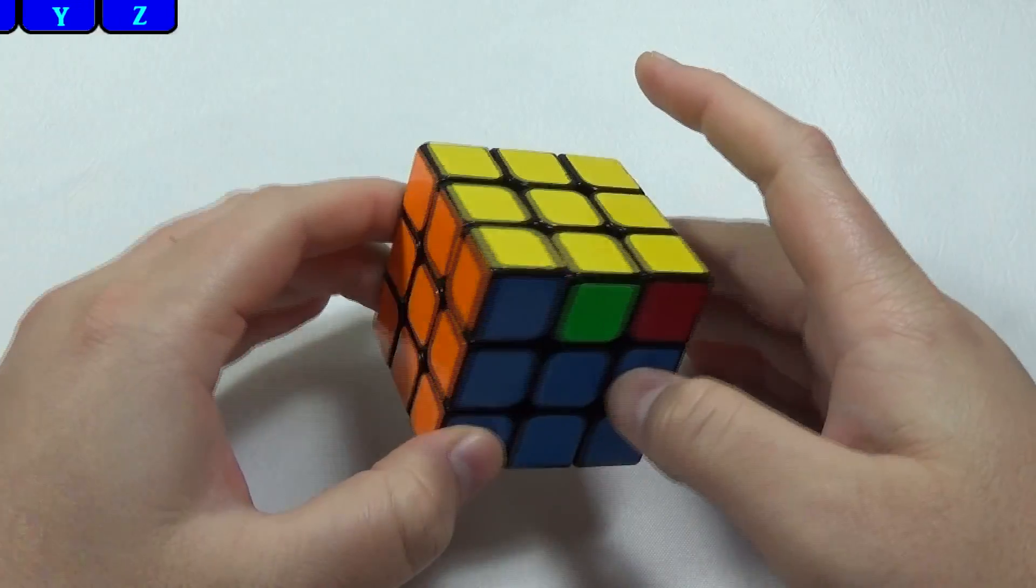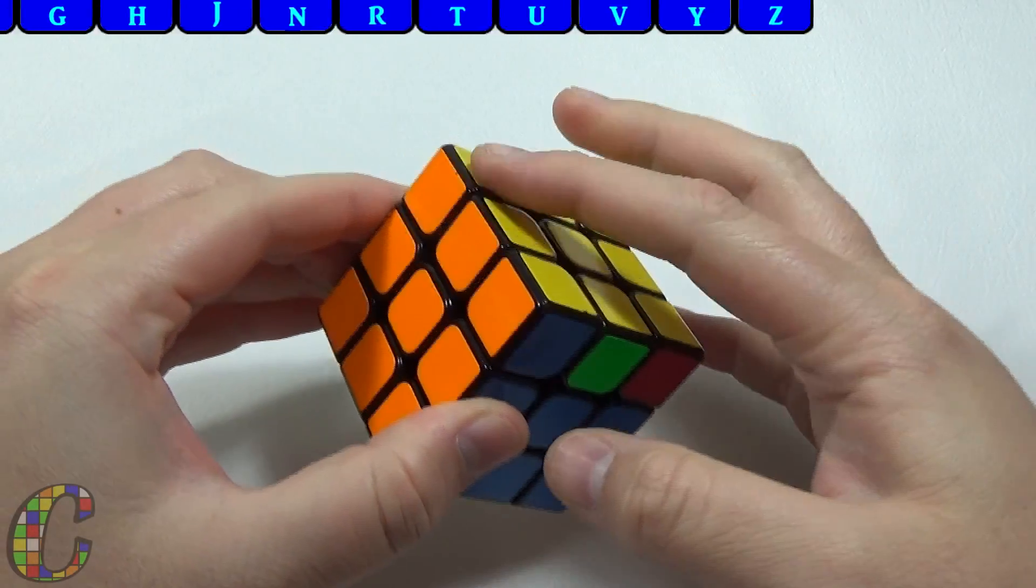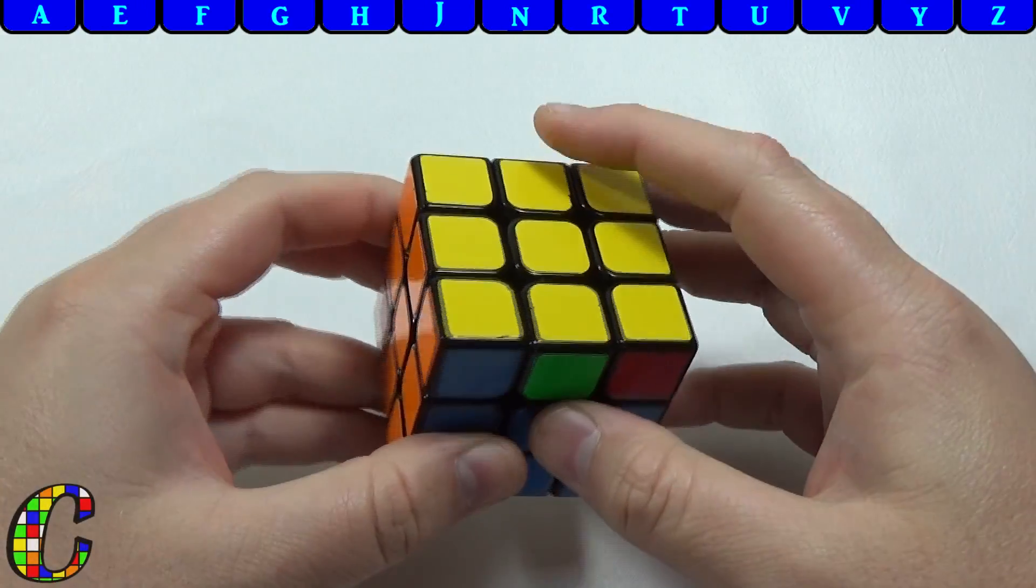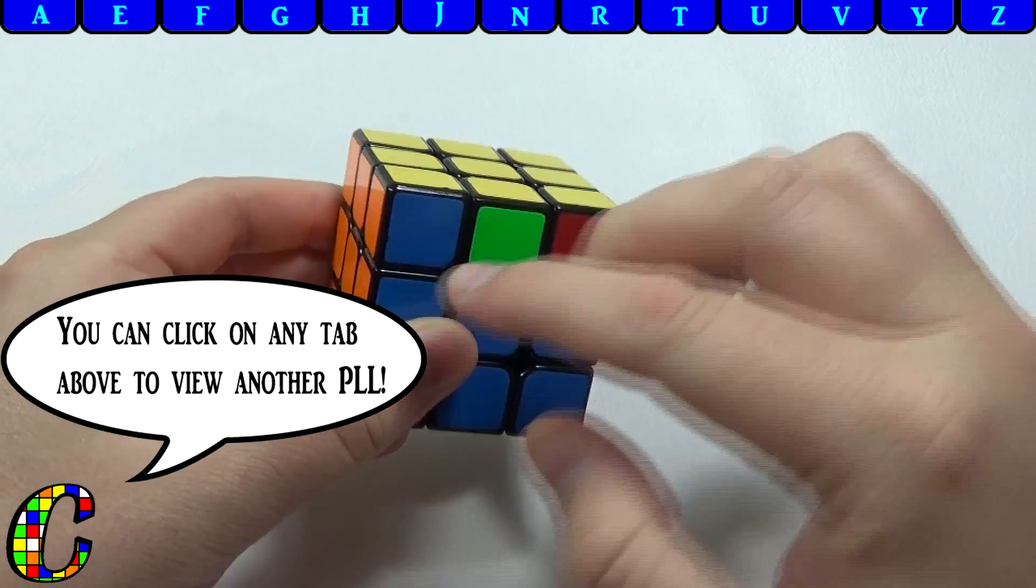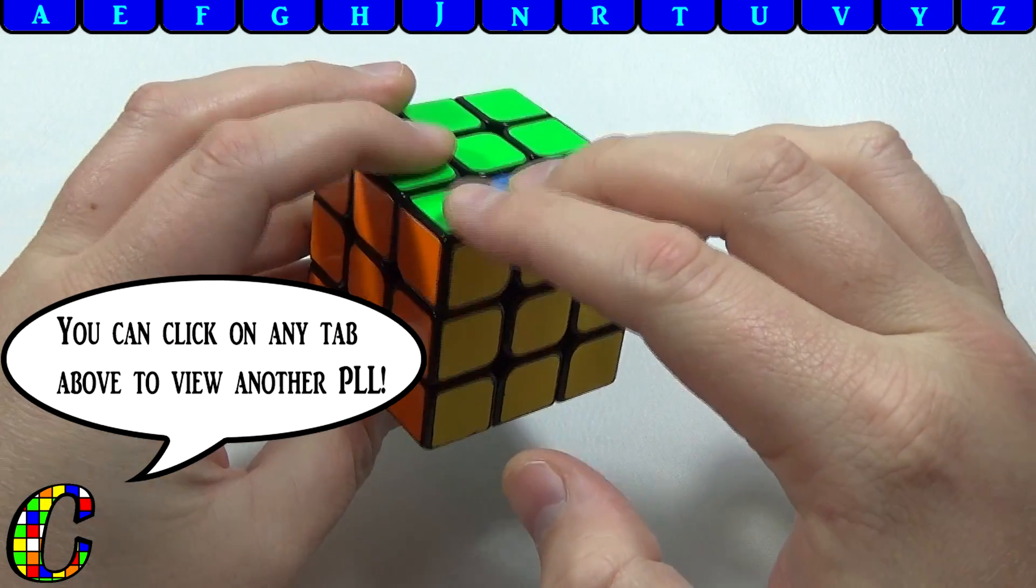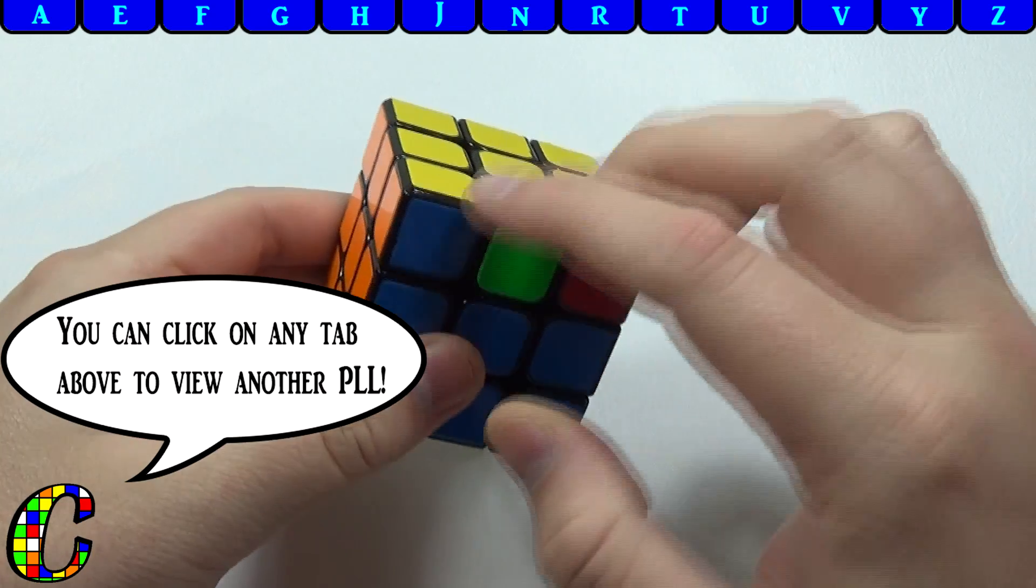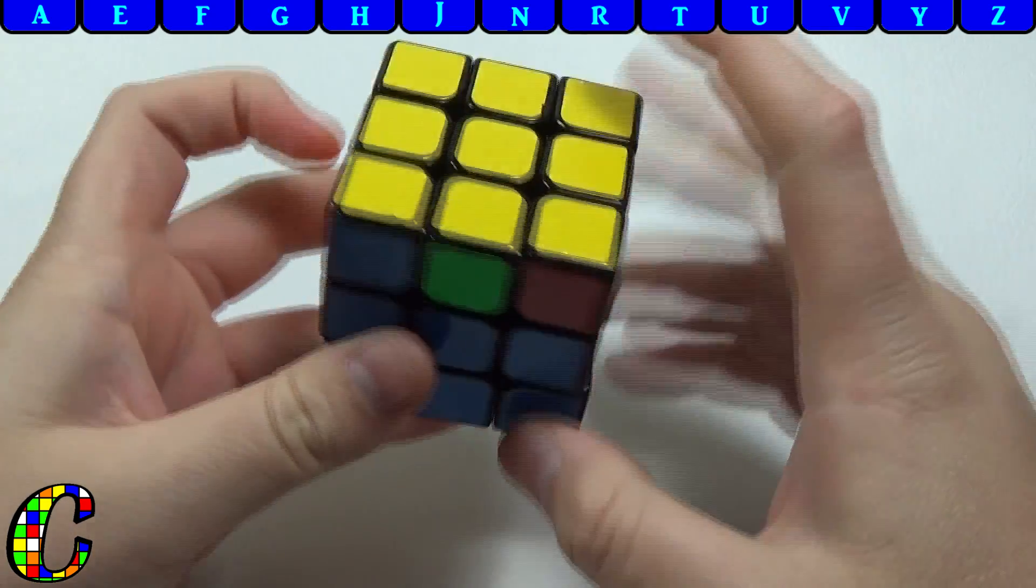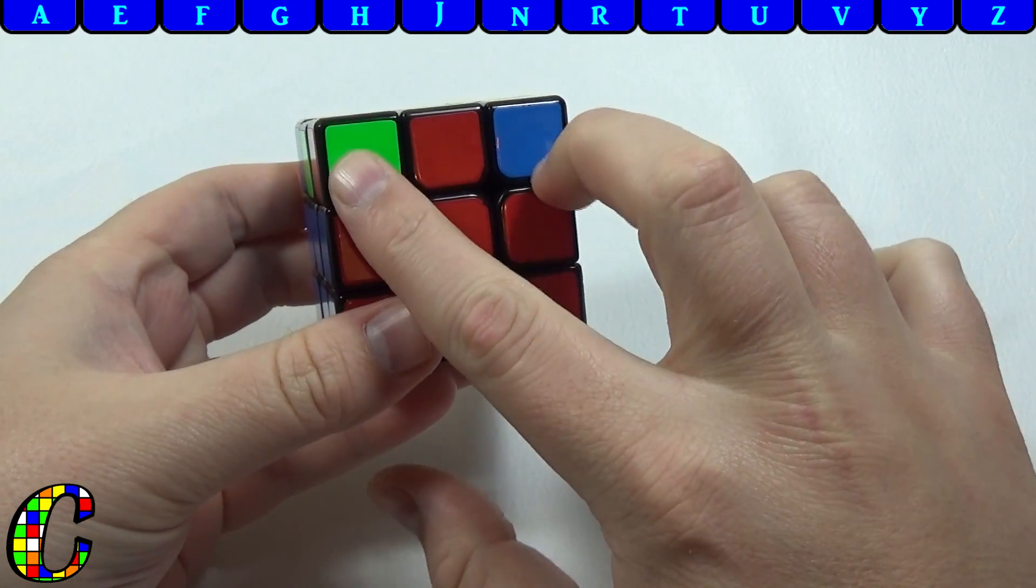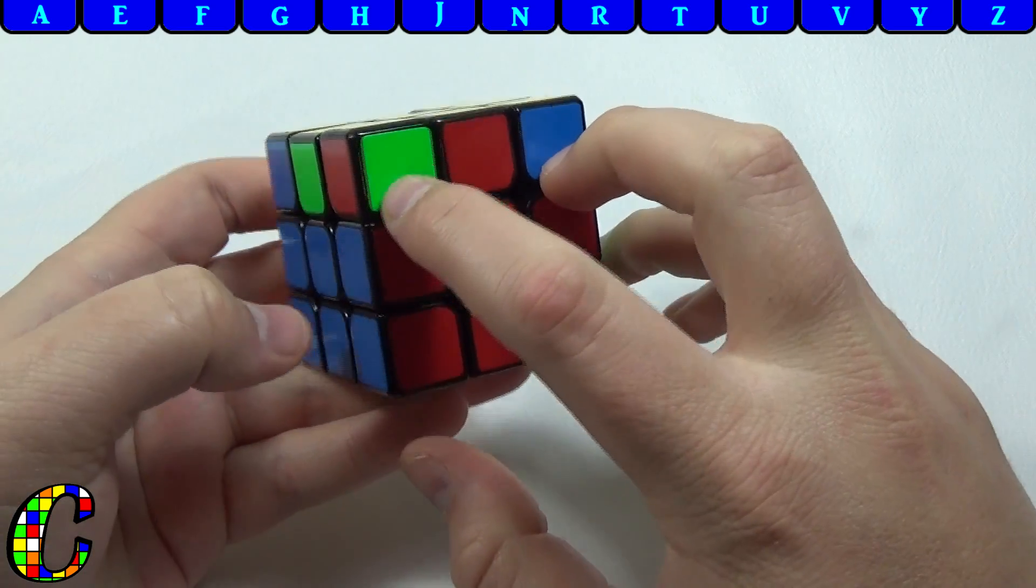Now recognizing this case is really easy. You can see that there's a bar on one side, and adjacent to that bar, these two pieces are going to be opposite. No matter what the bar is, these two are going to be opposite, as well as the headlights on the opposing face. They're going to be opposite colors.